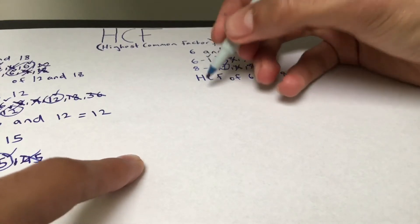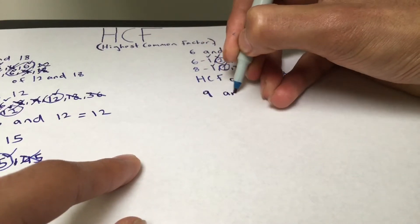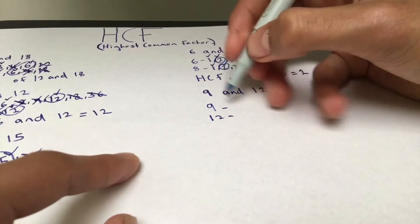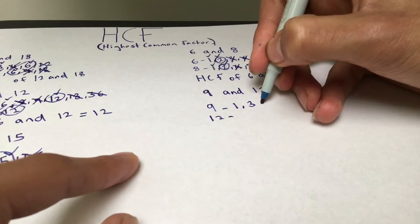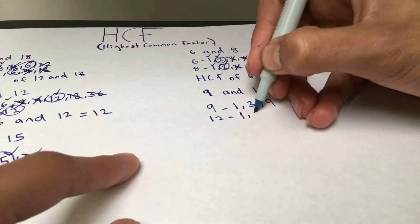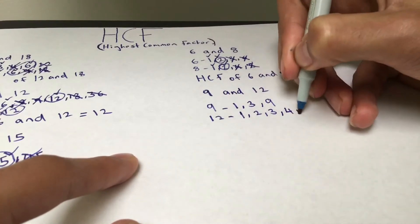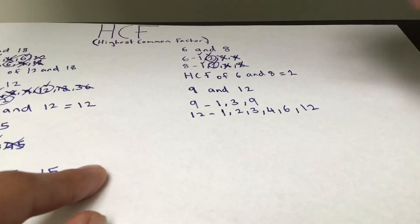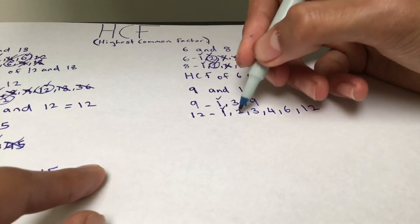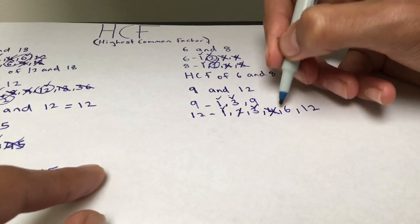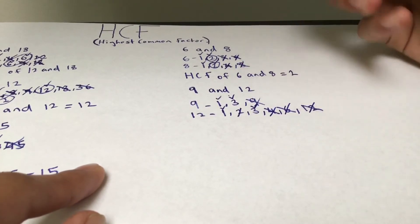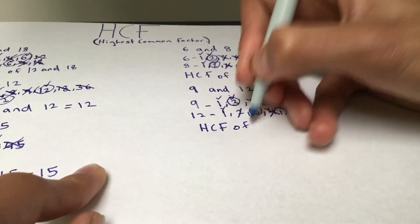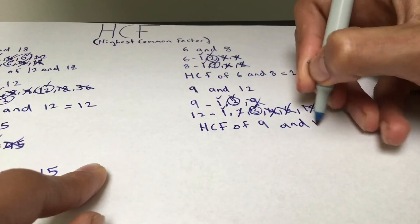Now let's move on to 9 and 12. We find the factors of both. For 9: 1, 3, and 9. For 12: 1, 2, 3, 4, 6, and 12. We tick what's in common — 1 and 3 are present; 2, 4, 6, 9, and 12 are crossed out. So 3 is our highest common factor. The HCF of 9 and 12 gives us 3.